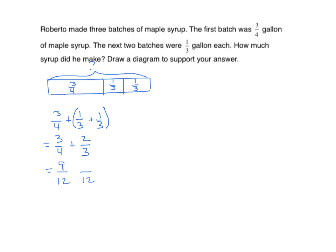Three-fourths is nine-twelfths. Two-thirds is eight-twelfths. The sum of nine-twelfths and eight-twelfths is seventeen-twelfths. We can leave the answer in that format — it might actually be easier. But I'm going to simplify it anyway: seventeen-twelfths equals twelve-twelfths plus five-twelfths, which equals one and five-twelfths. Now we have the choice of working with seventeen-twelfths or one and five-twelfths for our next problem.